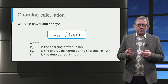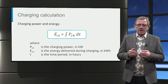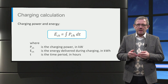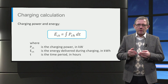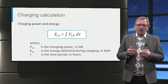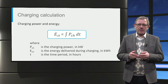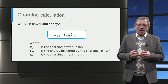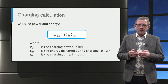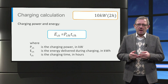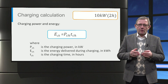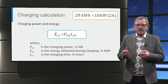Next, the energy delivered to the battery during the charging, E-charge, can be estimated as the time integral of the charging power, P-charge. The typical units used for charging time, charging power and energies are hours, kilowatts and kilowatt-hours respectively. If the charging power is constant, this simply boils down to the product of the charging power, P-charge, and the charging time, T-charge. For example, a 10 kilowatt charger used for 2 hours delivers 20 kilowatt-hours.